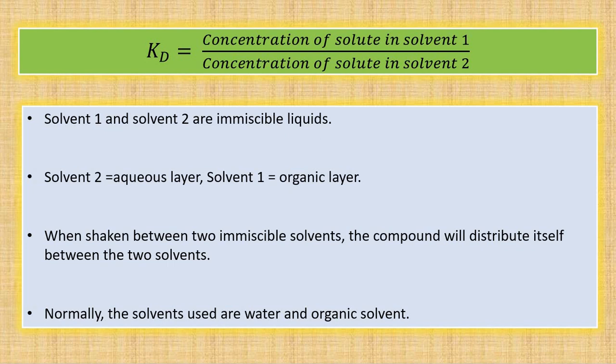The distribution coefficient equals the concentration of solute in solvent 1 divided by the concentration of solute in solvent 2, where solvent 1 and solvent 2 are immiscible liquids. Solvent 2 is the aqueous layer and solvent 1 is the organic layer. So the equation is written as concentration of solute in organic layer divided by concentration of solute in aqueous layer. When you cap the separatory funnel and shake the two immiscible solvents, the component distributes itself.